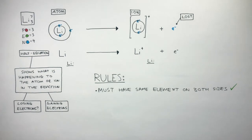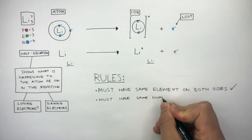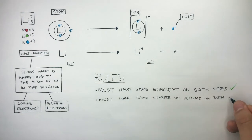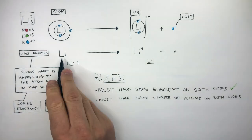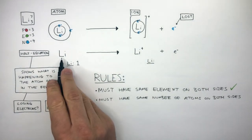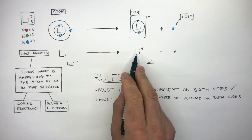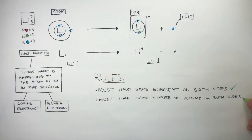The next rule: the half equation must have the same number of atoms on both sides. We can see there is one lithium atom on the left, so we write a one here, and there is one lithium cation on the right, so we write a one here. The equation is balanced.